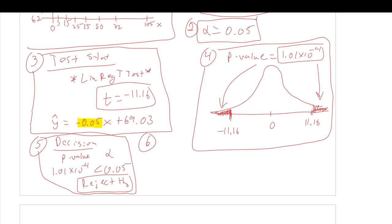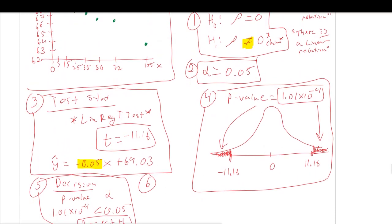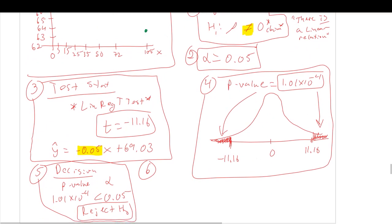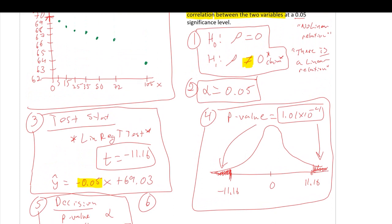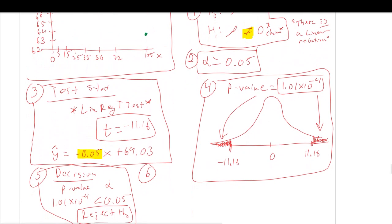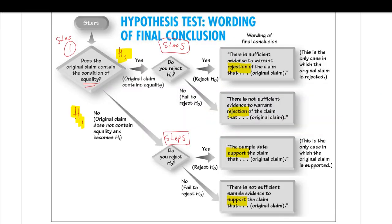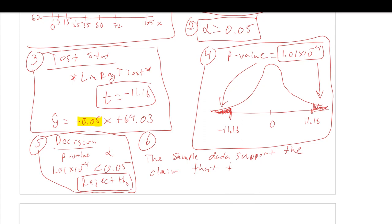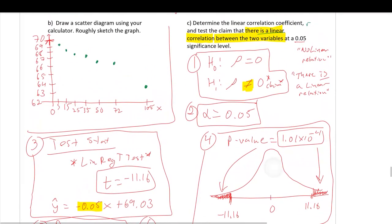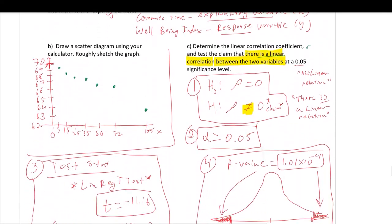Step six — conclusion statement: since the alternative was the claim and we rejected the null hypothesis, the sample data supports the claim. Using the flowchart: the alternative was the claim, we rejected the null, so the sample data supports the claim that there is a linear correlation between commute time and the well-being index.